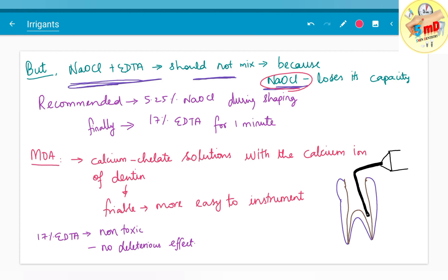Therefore, after sodium hypochlorite use is over, we use EDTA. 5.25% sodium hypochlorite during shaping, followed by 17% EDTA for one minute as a final irrigant is the recommended protocol.